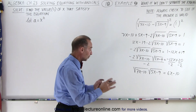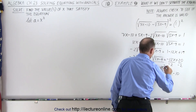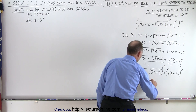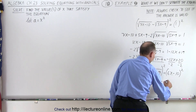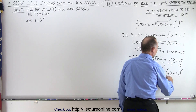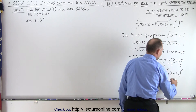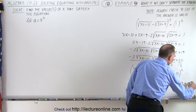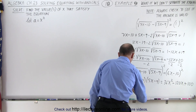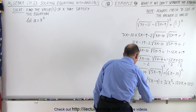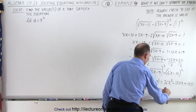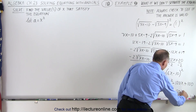Now we're ready to square both sides again. When we square the left side we simply get (7x minus 10) multiplied by (5x minus 9). On the right side, (6x minus 10) squared gives us 36x squared minus 120x plus 100. On the left side, multiplying out gives us 35x squared minus 63x minus 50x plus 90.